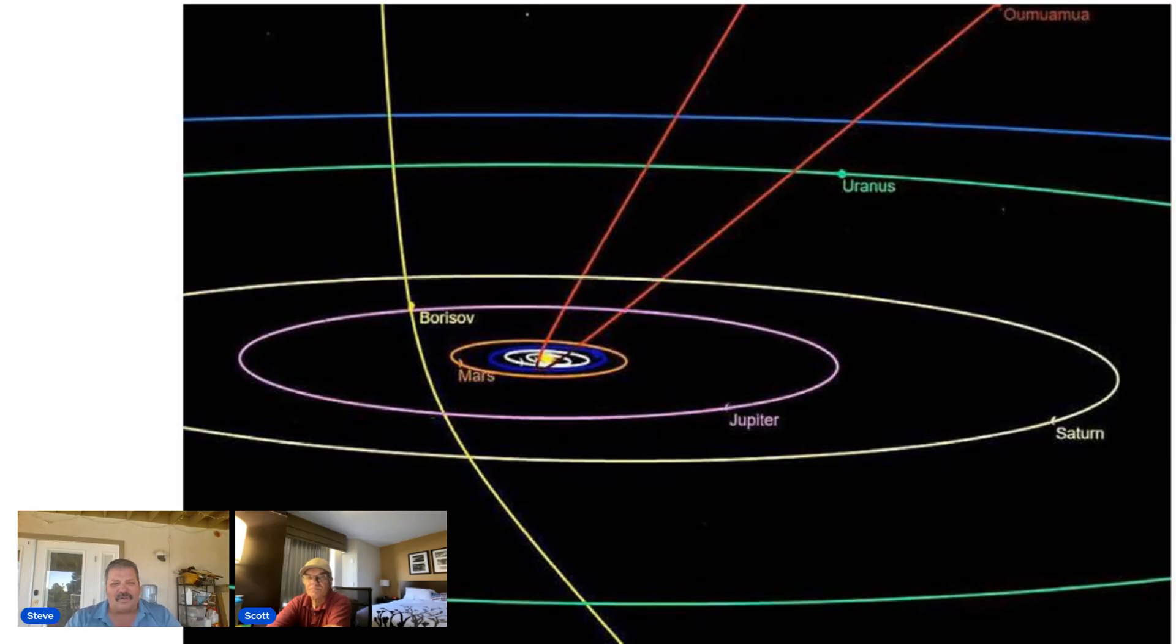This visitor was named Oumuamua, which means scout in Hawaiian, in honor of the observatory in Hawaii that discovered it. Initially classified as an asteroid, Oumuamua has since shown signs of being a comet. The second object, and A11PL3Z's direct predecessor, confirmed to have strayed from another star system into our own, is 21/Borisov, discovered in 2019 and believed to be a comet.